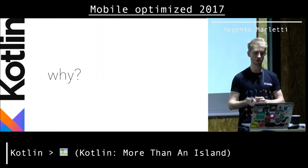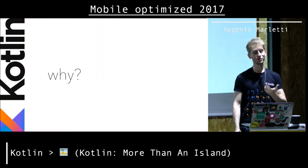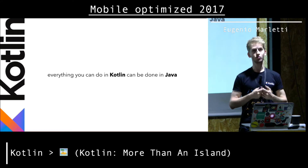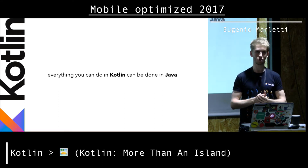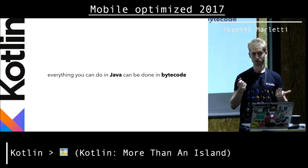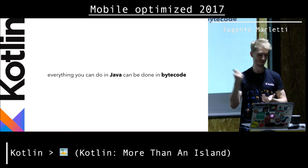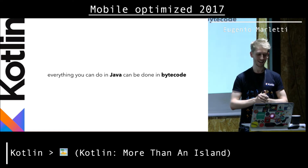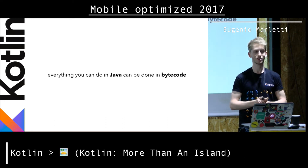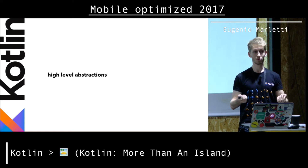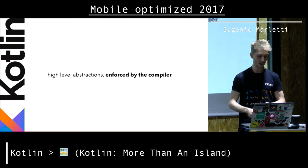Why would you use Kotlin? Everything you can do in Kotlin, you can do in Java. You can also say that everything you can do in Java, you can do in bytecode. Sure, you could go full bytecode, but which one would you rather use — the one that is more readable and safer? Kotlin to me is not about being less verbose. It's about high-level abstractions that you could write by hand if you wanted to, but in this case they're enforced by the compiler. There are plenty of examples: sealed classes, delegation — another thing baked into the language where a class can delegate different interfaces to other instances.